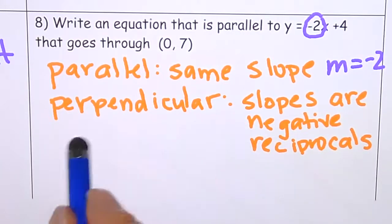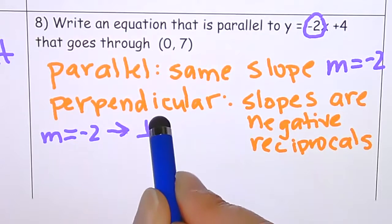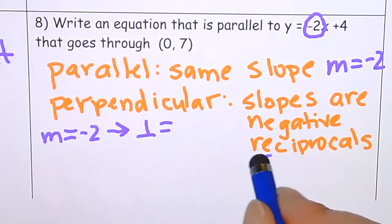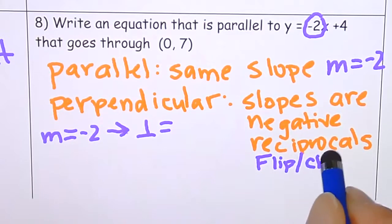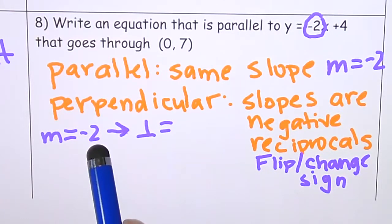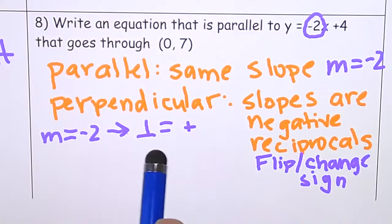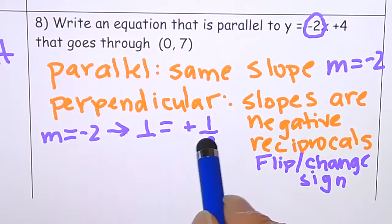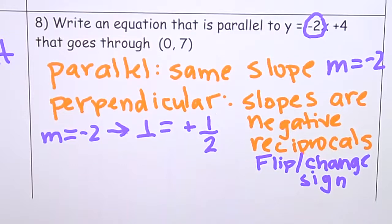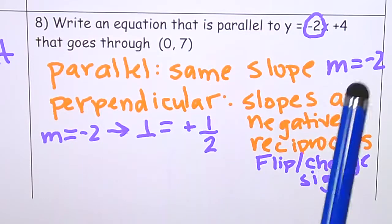If they had asked for perpendicular and the original slope is negative 2, you flip and change the sign. Flipping negative 2 over 1 gives 1 over 2, and changing the sign makes it positive — so the perpendicular slope would be positive one-half. But since they wanted parallel, my new line has the same slope: m equals negative 2.